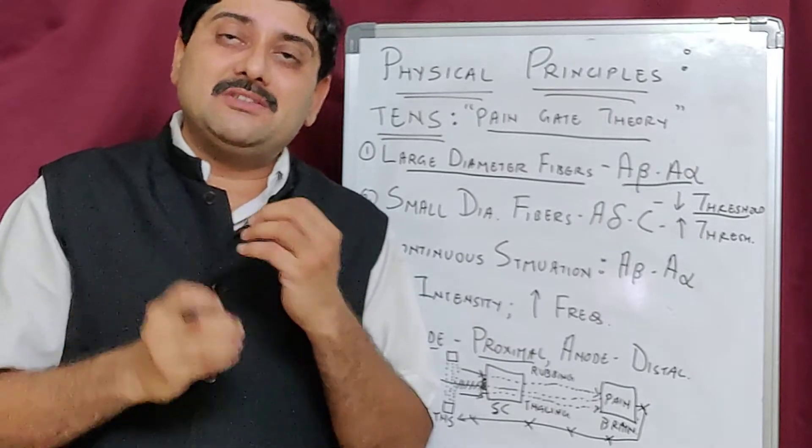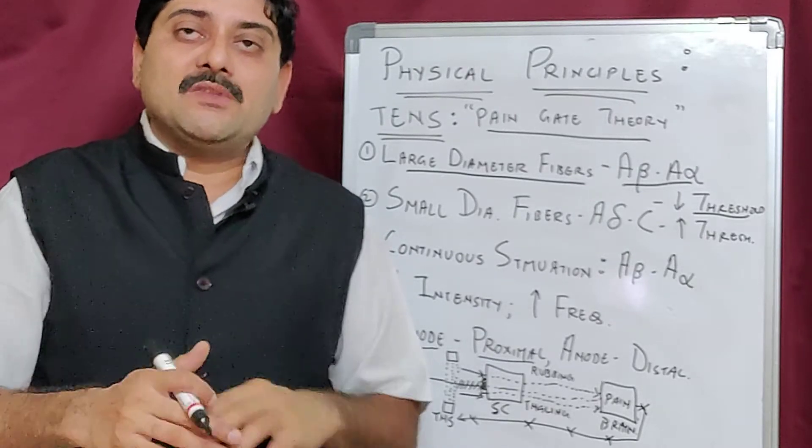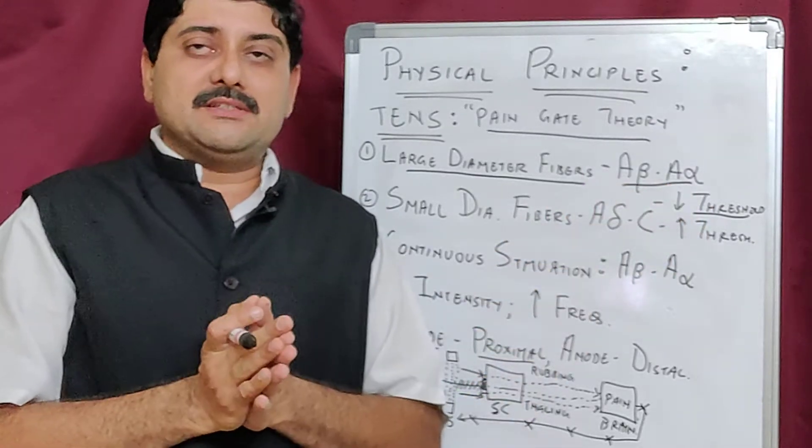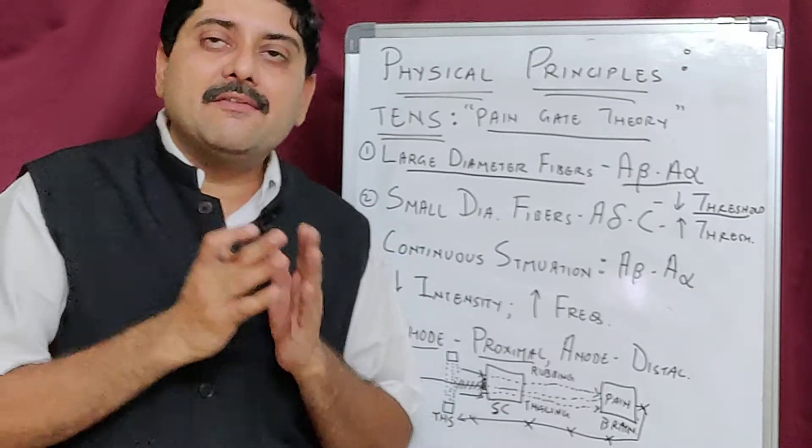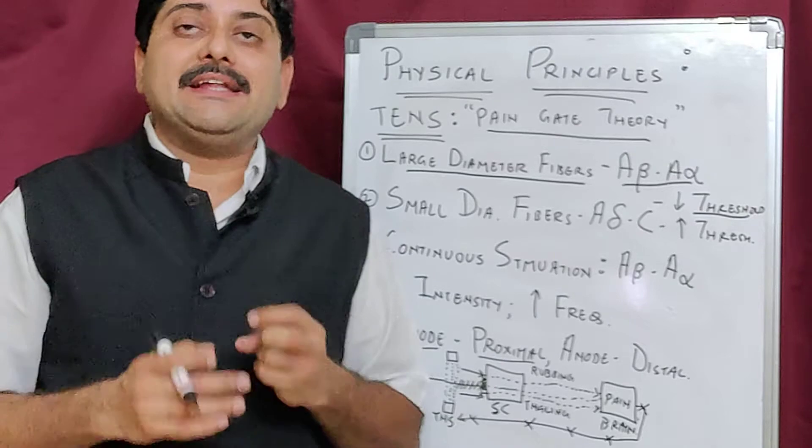They are present subcutaneously or cutaneously and have a low threshold, so they produce more stimulus. These stimuli travel faster towards the spinal cord.